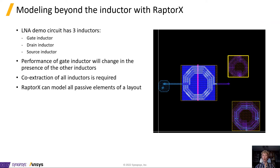The LNA block that is our demo vehicle uses three inductors: the gate inductor that we synthesized previously with Veloci RF, the drain inductor, and the source inductor. The performance of the gate inductor will inevitably be impacted by the presence of the other two coils. This performance shift should be taken into account as early as possible in the design cycle with the co-extraction of all spirals together.